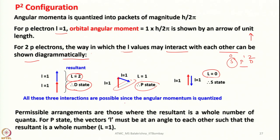All three interactions are possible since angular momentum is quantized. The permissible arrangements are those where the resultant is a whole number — fractional values such as 1.5 or 1.7 are not allowed. The vectors L must be at an angle to each other such that the resultant is a whole number: 0, 1, 2, or more. This is the criterion for arrangement.